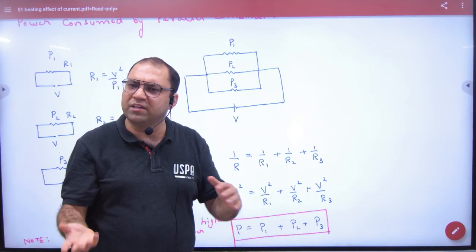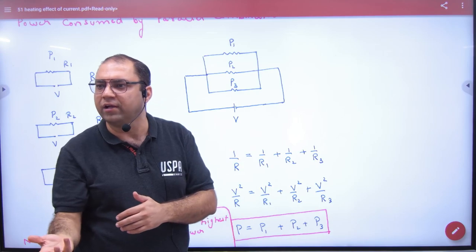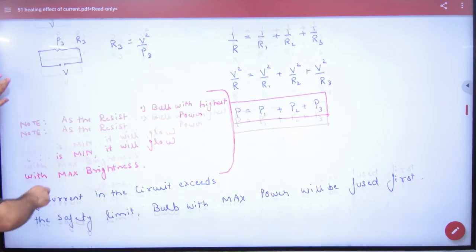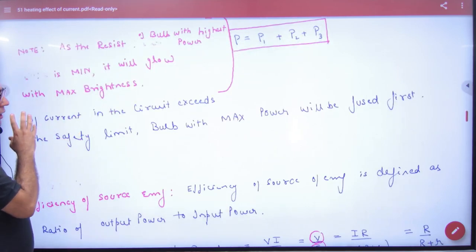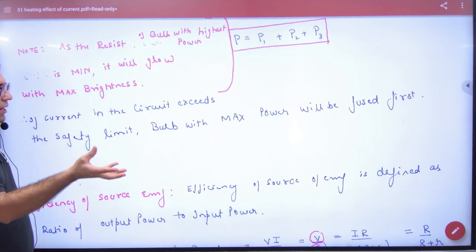Parallel is not a problem. There is no problem. In parallel, there is a result. So we will write a rule in this, that the brightness, we will write that whose power will be more light. Please write this.